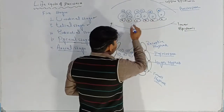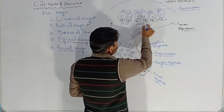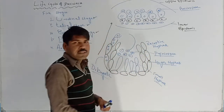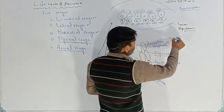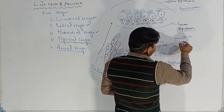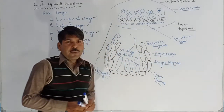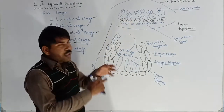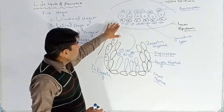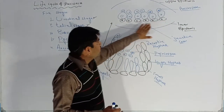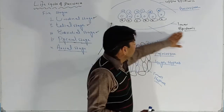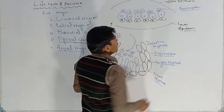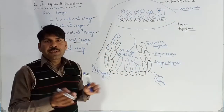Below the sterigma cells, there are smaller cells known as juncture cells. After some time, this layer of juncture cells becomes disintegrated. Due to the disintegration of these juncture cells, all the aeciospores become separated from each other. However, these are still immature spores at this stage.